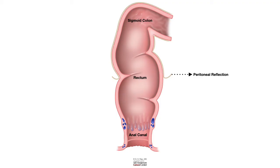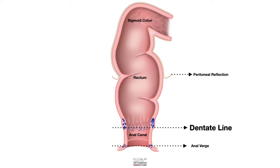So that is important to keep in mind about peritoneal reflection and whether something happened above or below the peritoneal reflection. The next important landmark is the dentate line, which separates the rectum from the anal canal. The lower portion is the anal verge.